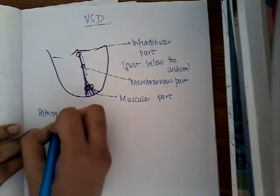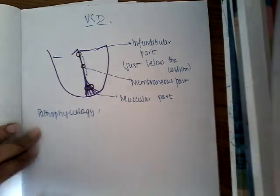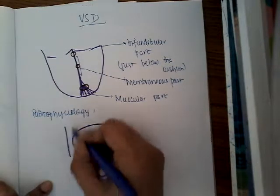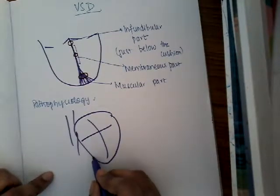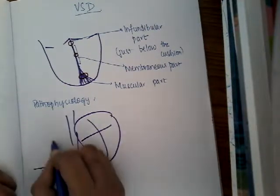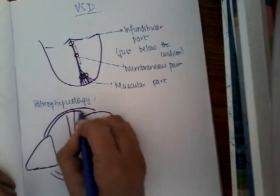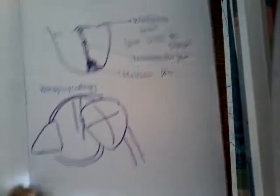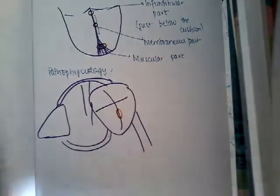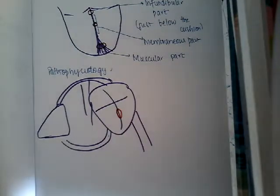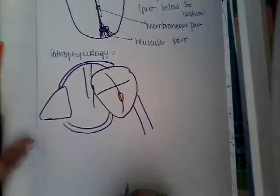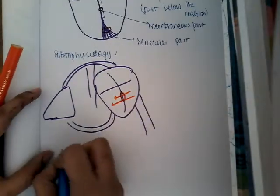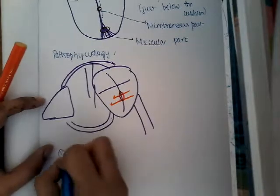Now let us learn about the pathophysiology of ventricular septal defects. In the normal heart, blood goes to the lungs, returns through the pulmonary veins, and then to the whole body. Now, when there is a defect in the ventricular septum, blood flows from the left ventricle to the right ventricle.